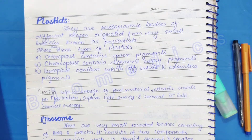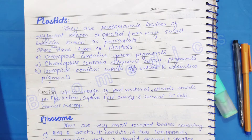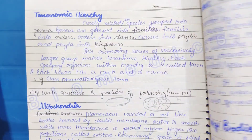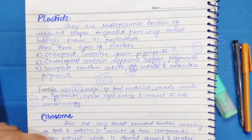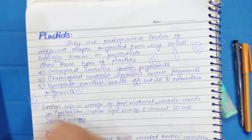Assalamualaikum students. Today we will do Part 2 of short questions botany first year at DJ College, in which we were studying definitions. We were discussing definitions of organelles. In the previous part we studied mitochondria, nucleus, and golgi bodies. In Part 2 we will start with plastids.